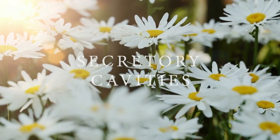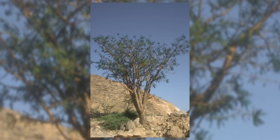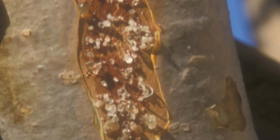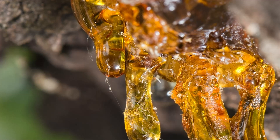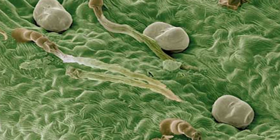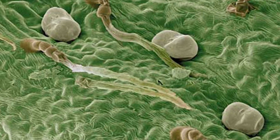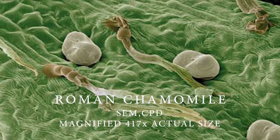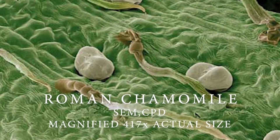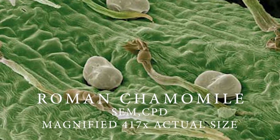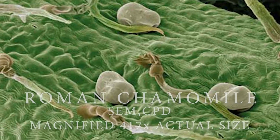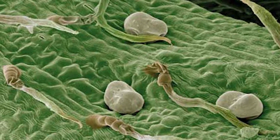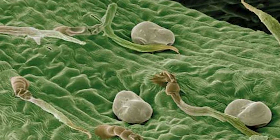Secretory cavities are more or less spherical structures that can be formed in two ways. They are found in soft plant tissue composed of a thin cell wall, usually right on the surface of the plant. In this next picture, you can see Roman chamomile — the upper leaf structure has been magnified 417 times its actual size, and you can see those little pockets containing the essential oil.